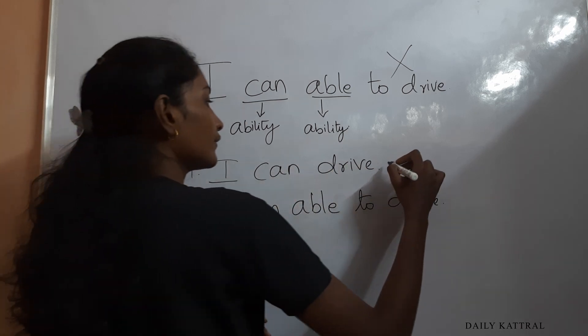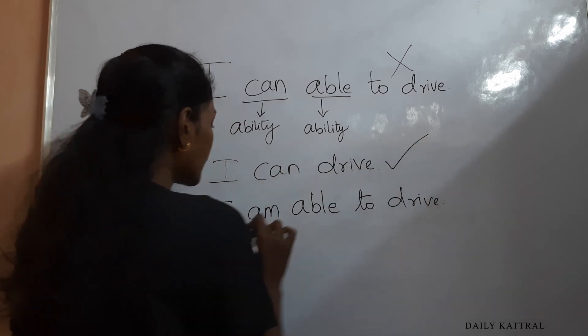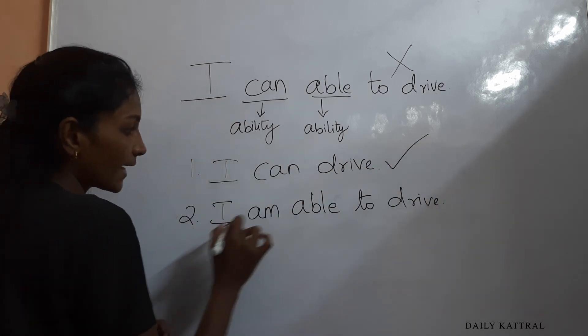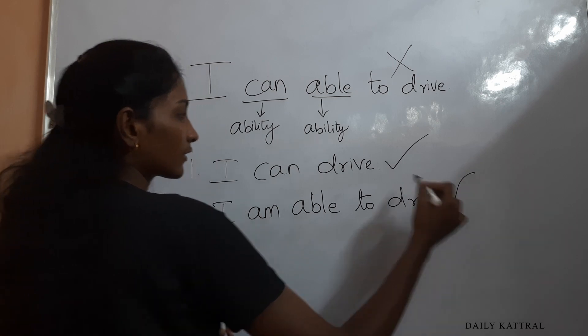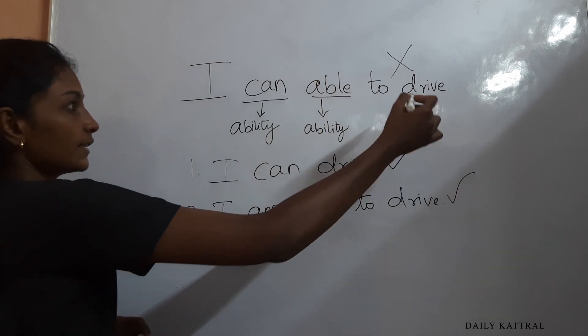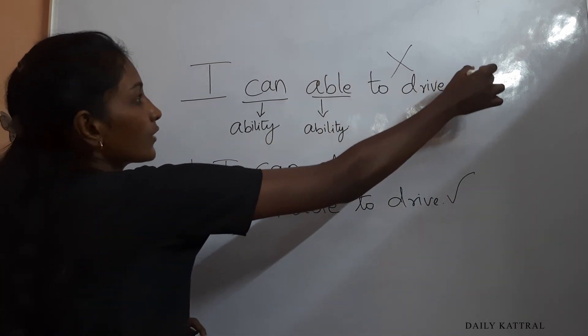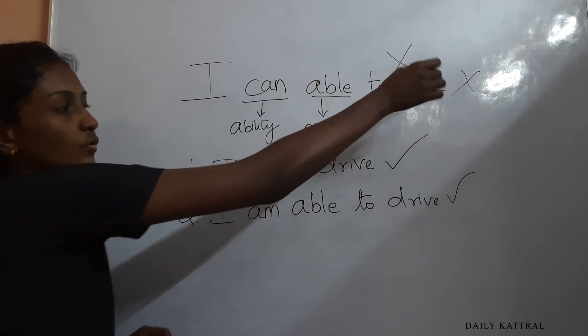Either 'I can drive' — this is correct — or 'I am able to drive' — this is also correct. Both sentences are acceptable. You use one or the other, not both together.